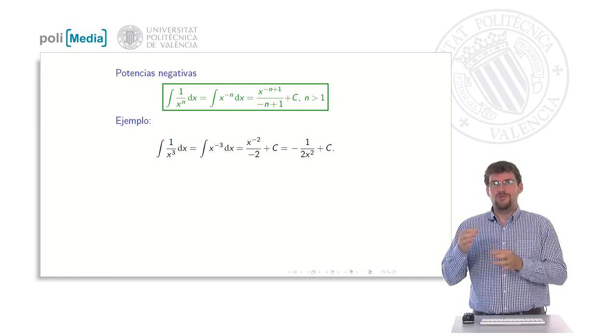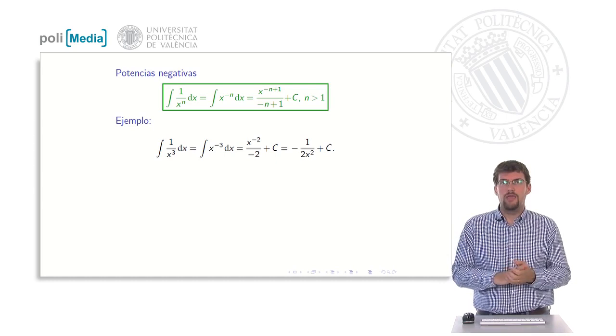And now we get to simplify it by sorting things out a little. The x power to minus 2 is actually 1 divided by x squared, the minus we can move forward. And we will end up having this way simpler expression here.